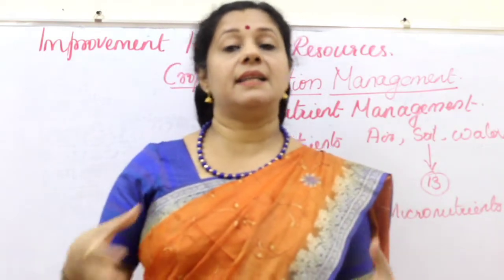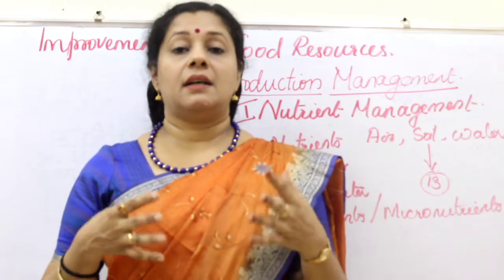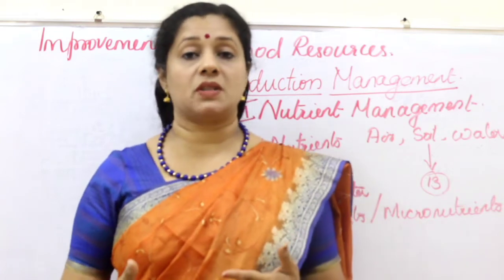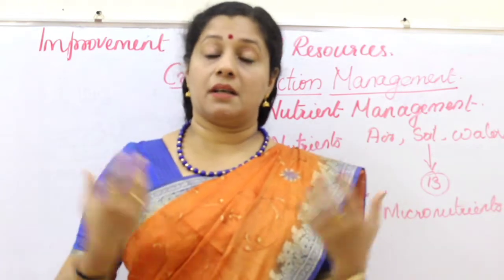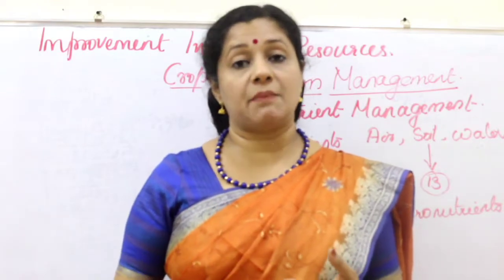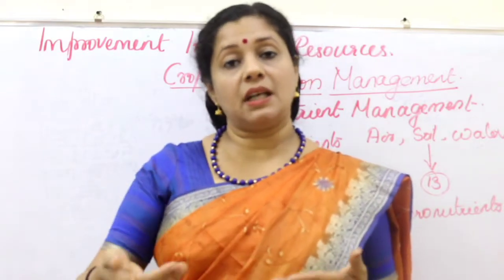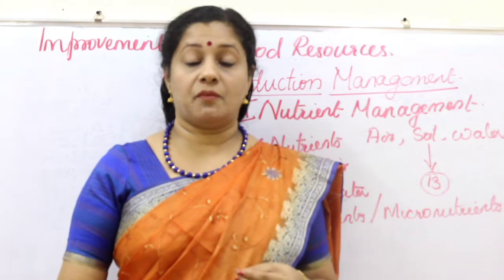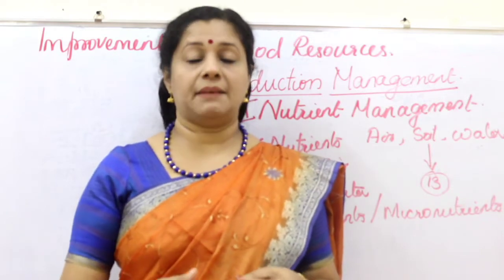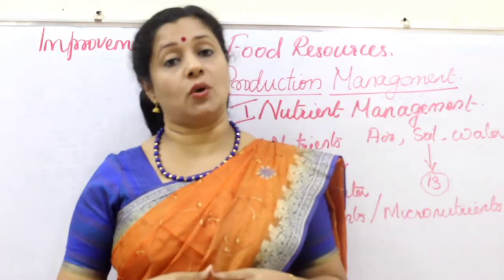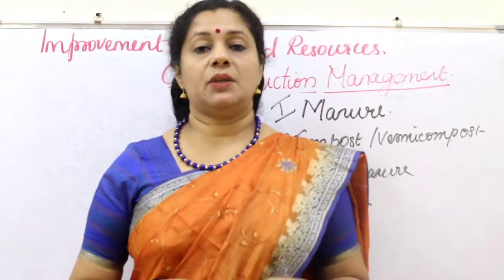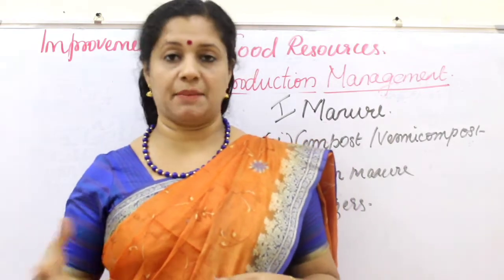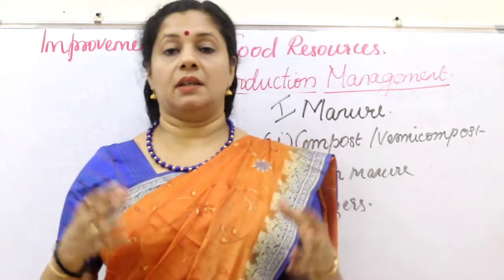If a plant is not getting these minerals properly from the soil, it will show some deficiency, affecting the physiological processes of the plant. Plant growth, and also reproduction, will be affected — and if reproduction is affected, our yield will be less. The farmer has to ensure that he is providing all these nutrients to the soil, enriching it and increasing soil fertility. We can increase soil fertility by either using the natural method called manure, or by using artificially or commercially prepared chemical fertilizers.